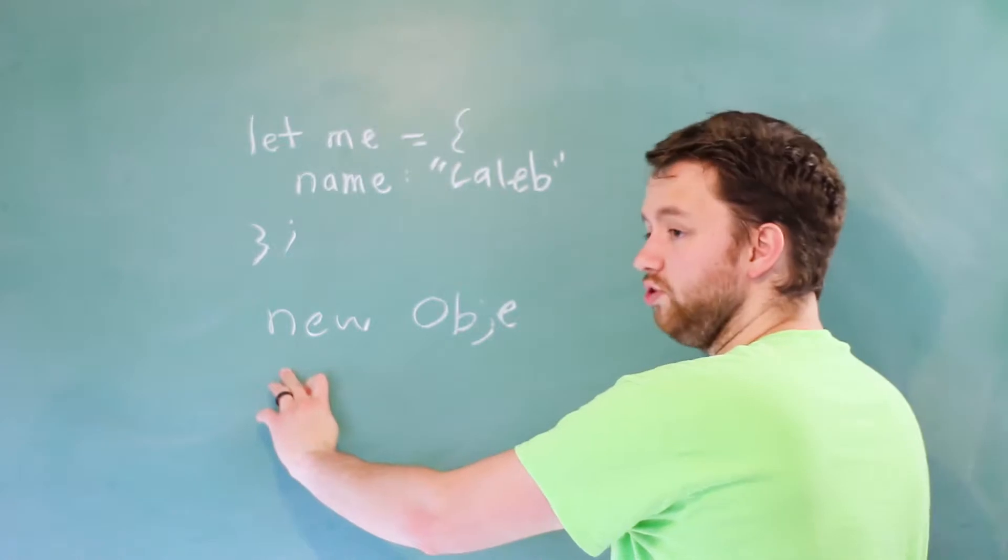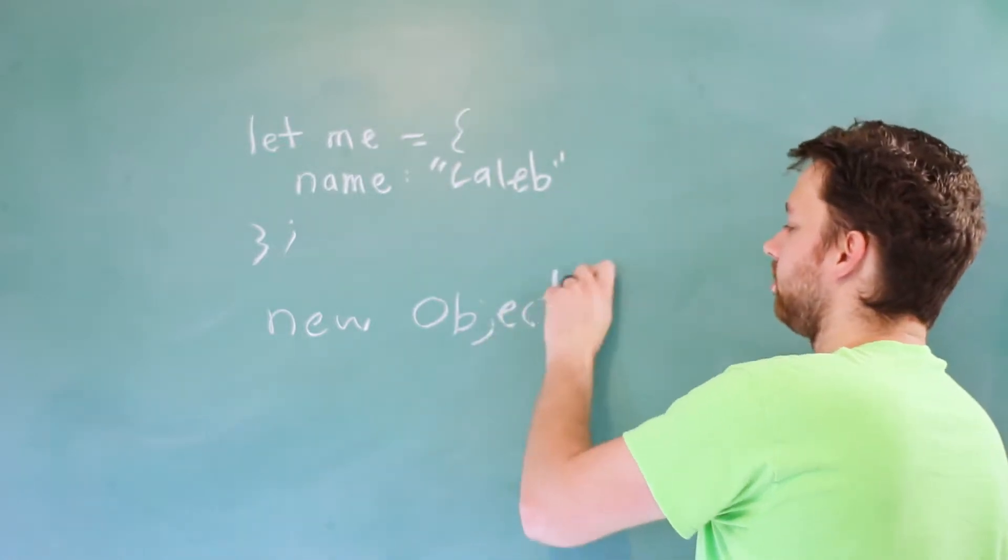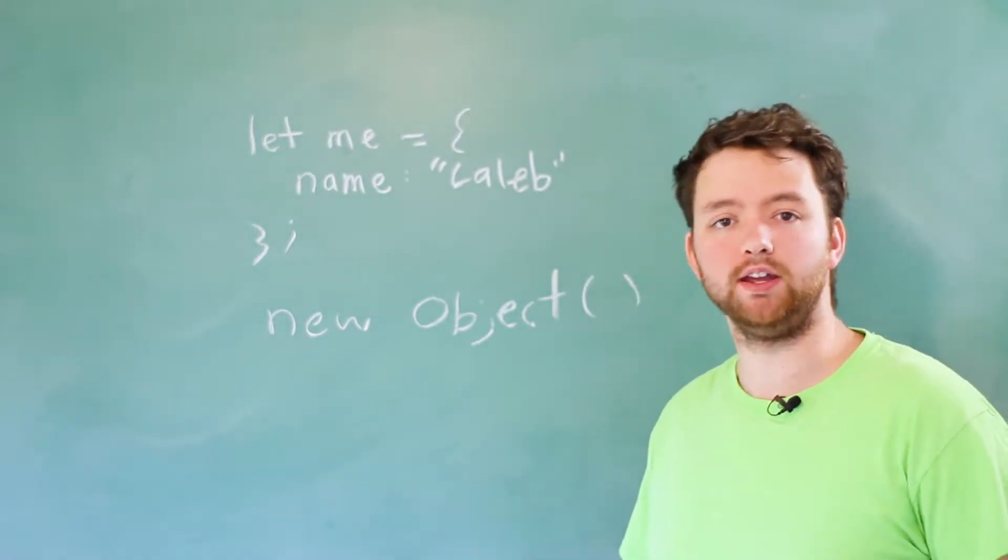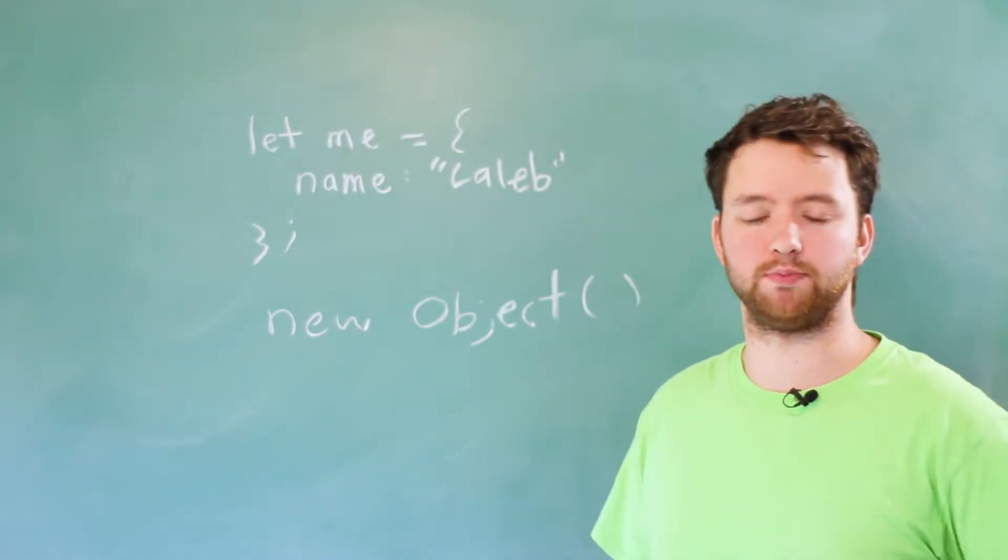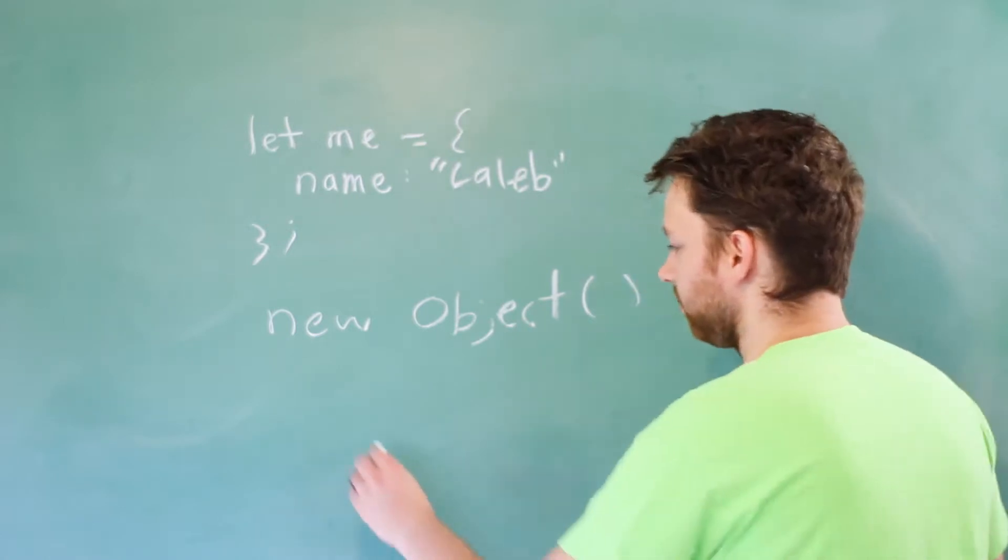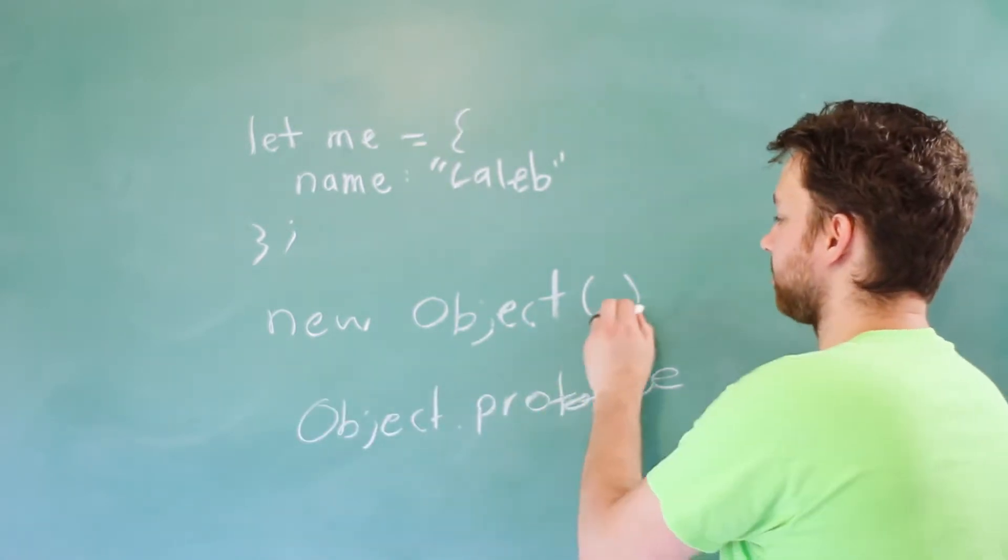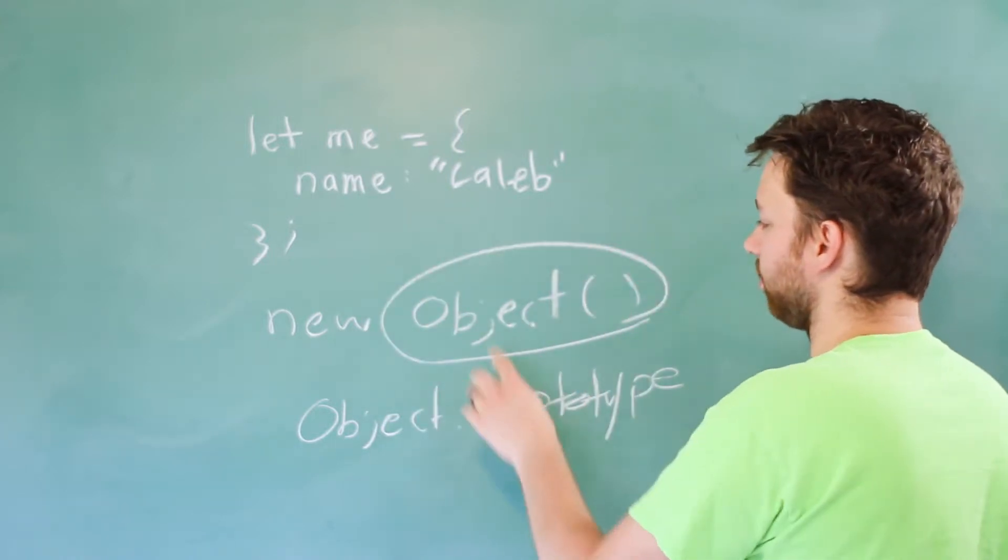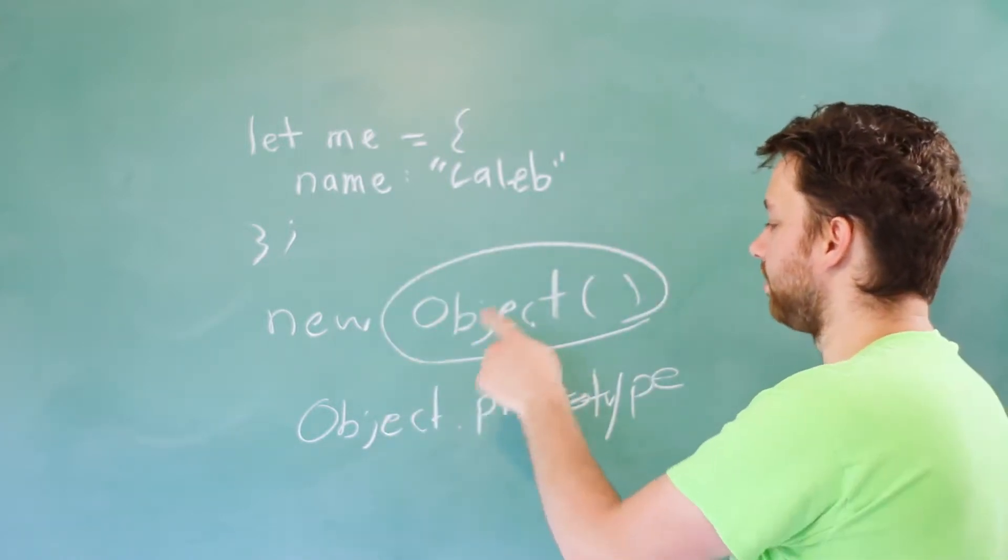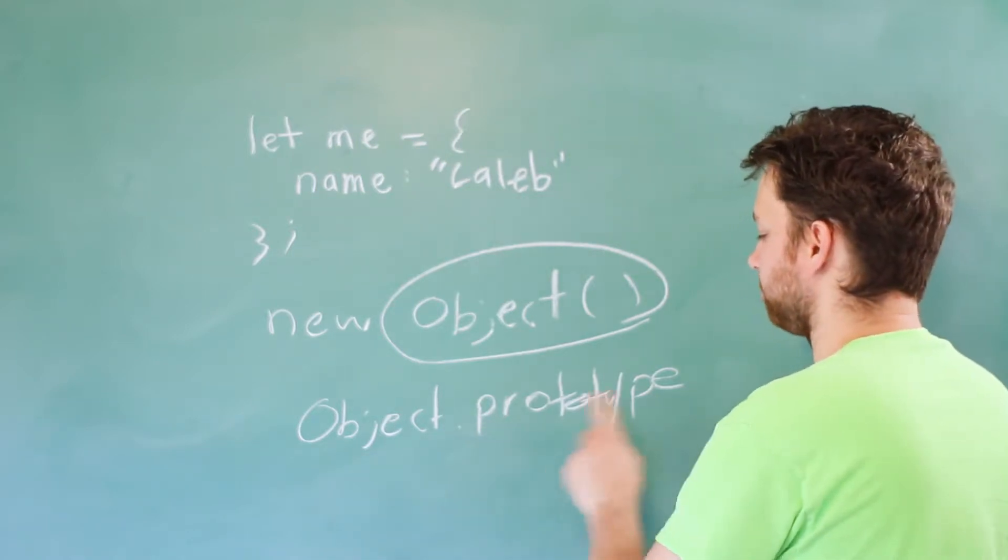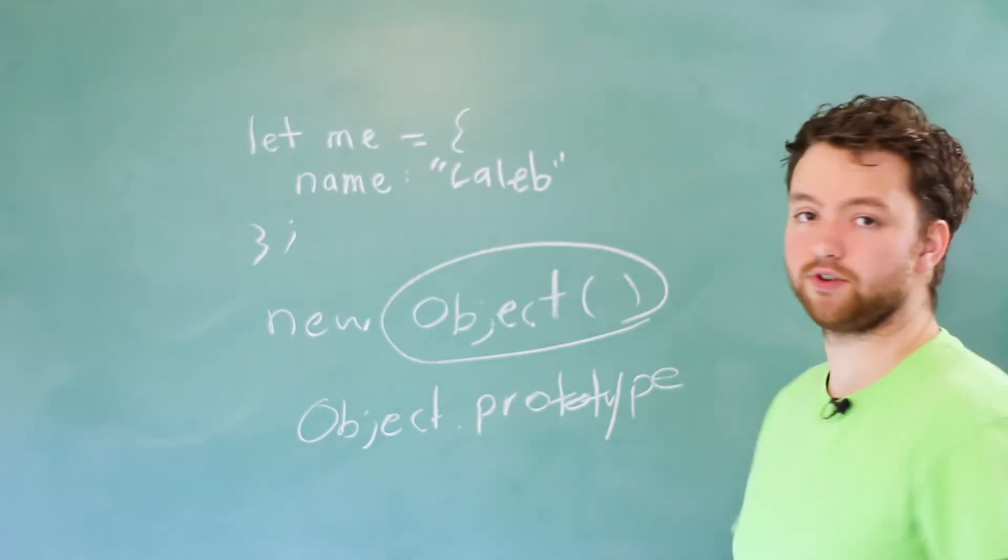Basically, you say new and then you invoke this function called object with a capital O. Now, when we create a method, it has a prototype. So in the previous video, we talked about object.prototype. Now we get a little bit more context and understand where this comes from. We have this constructor called object with capital O, and this constructor is going to have a prototype, which is accessible through this prototype property of the constructor.